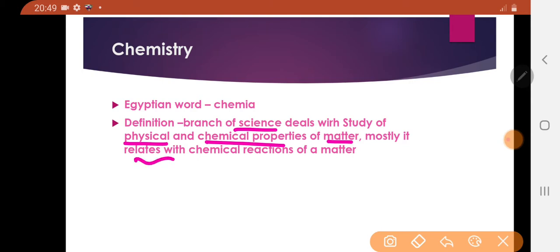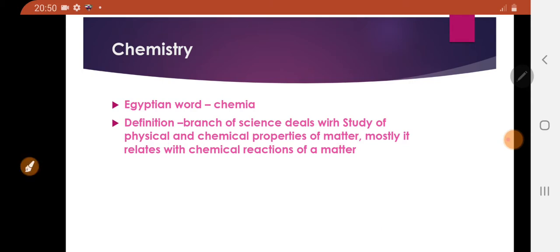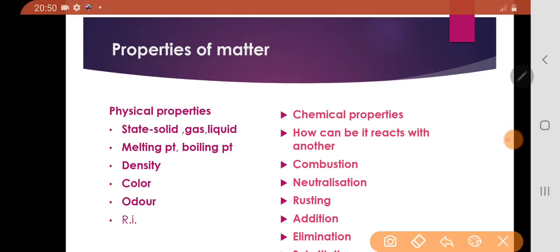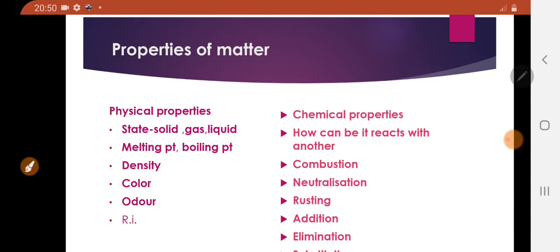The definition of chemistry: it is a branch of science which deals with the study of physical and chemical properties of matter, and it relates with the chemical reactions of matter. So what are the properties of matter? There are two types of properties: one is physical property and another is chemical properties.